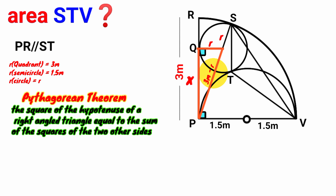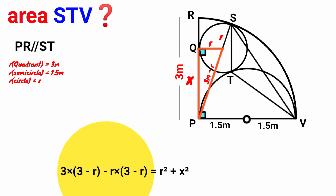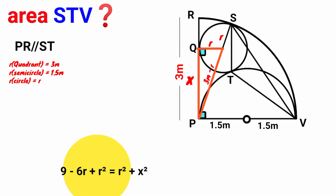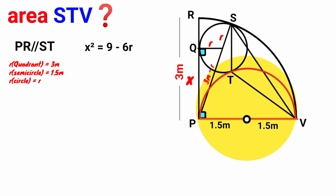The hypotenuse is the side facing the right angle, so applying Pythagoras: (3 − r)² = r² + x². Expanding (3 − r)²: 3 times (3 − r) minus r times (3 − r) gives 9 − 3r − 3r + r², which simplifies to 9 − 6r + r². The r² cancels, leaving x² = 9 − 6r. We set this equation aside for now.